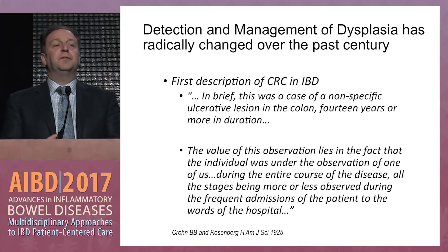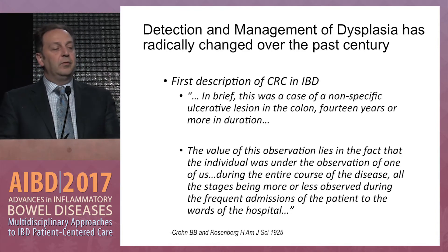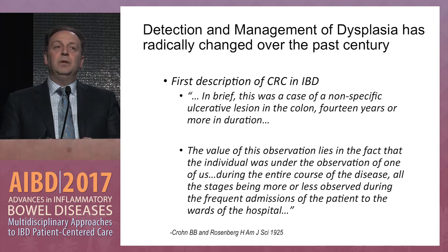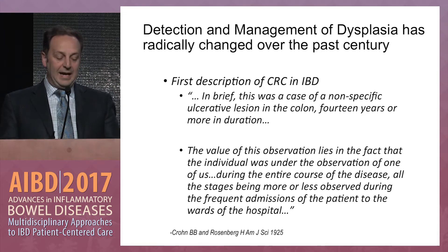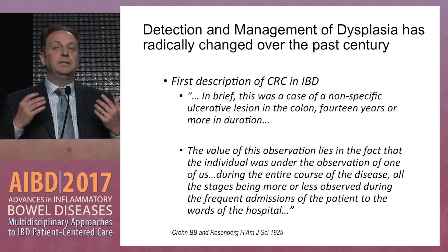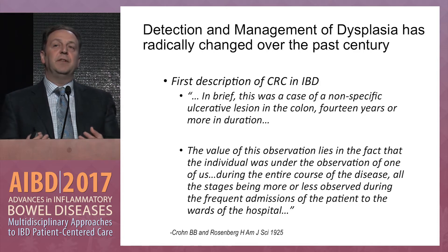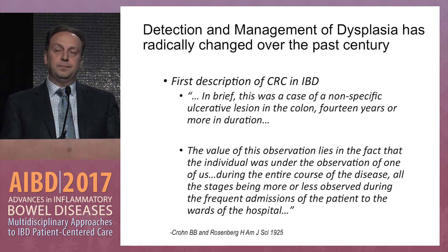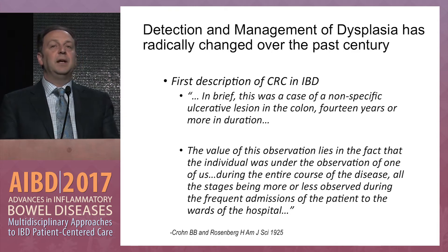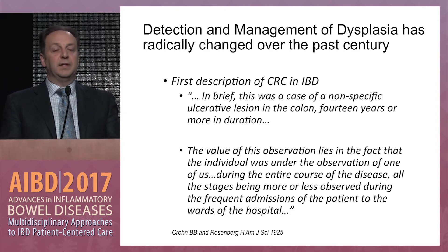This was the first description of colorectal cancer and IBD from 1925 by Crohn's. It was really a case report describing how cancer happened on their watch — a patient observed in the hospital where the ulcer was seen, not somebody who was lost to follow-up. This really framed how we thought about dysplasia and IBD for the longest time.